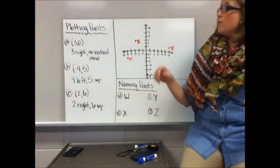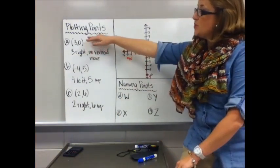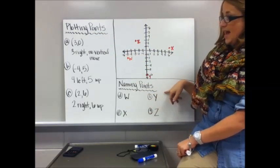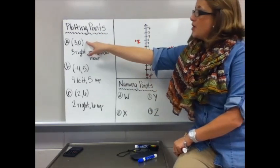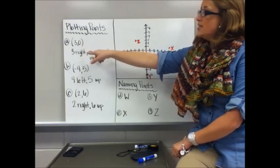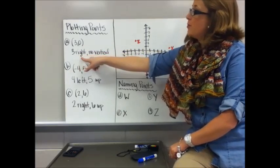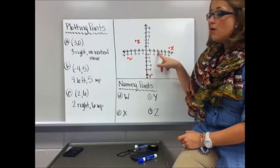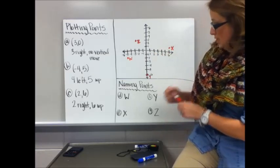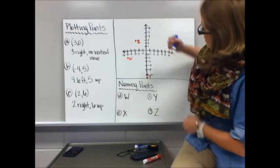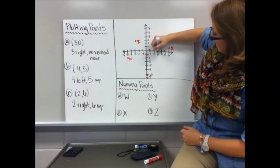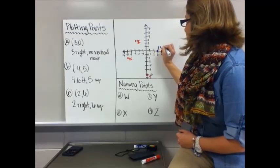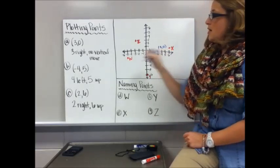There are two skills that I want you to learn in this lesson. I want you to be able to plot points and I want you to be able to name points. So the first one in part A is three, zero. That means you're going to go three to the right. One, two, three. And there's no vertical move because the y coordinate is zero. So it's going to be plotted on the x axis. Three, zero.